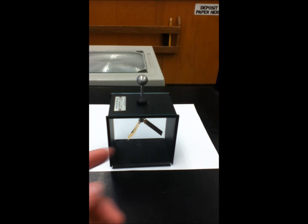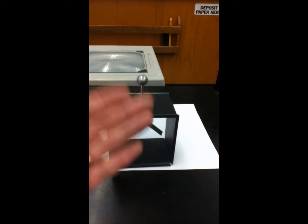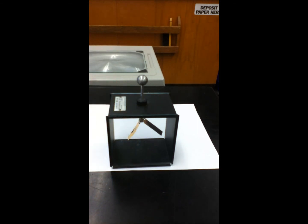We pull the glass rod away. The leaflets stay apart, so the electroscope has a charge that remains.